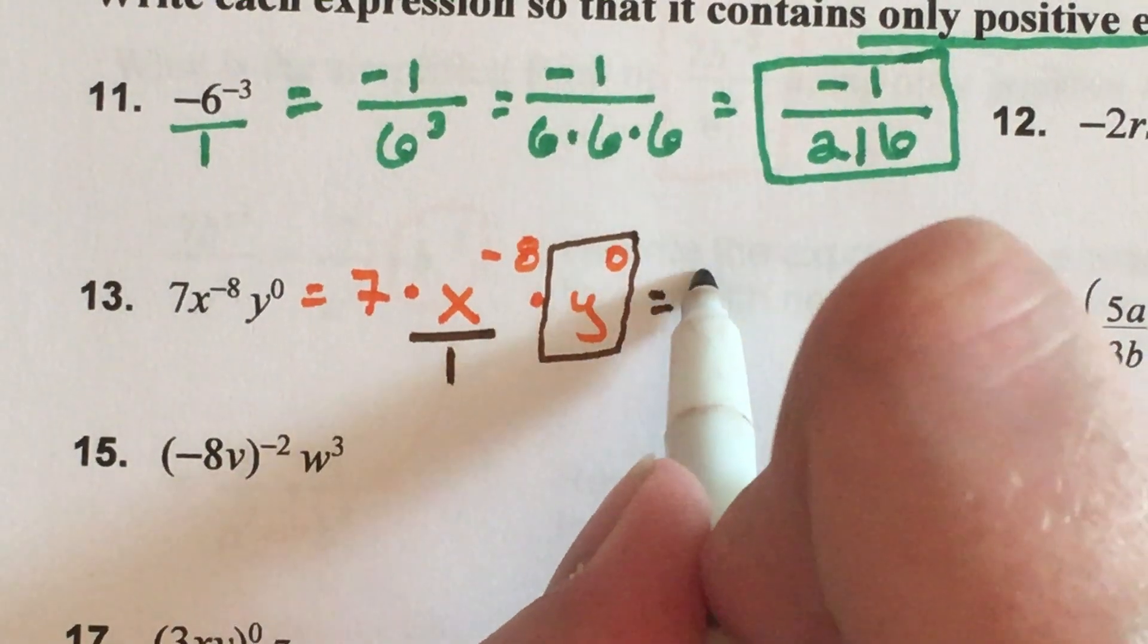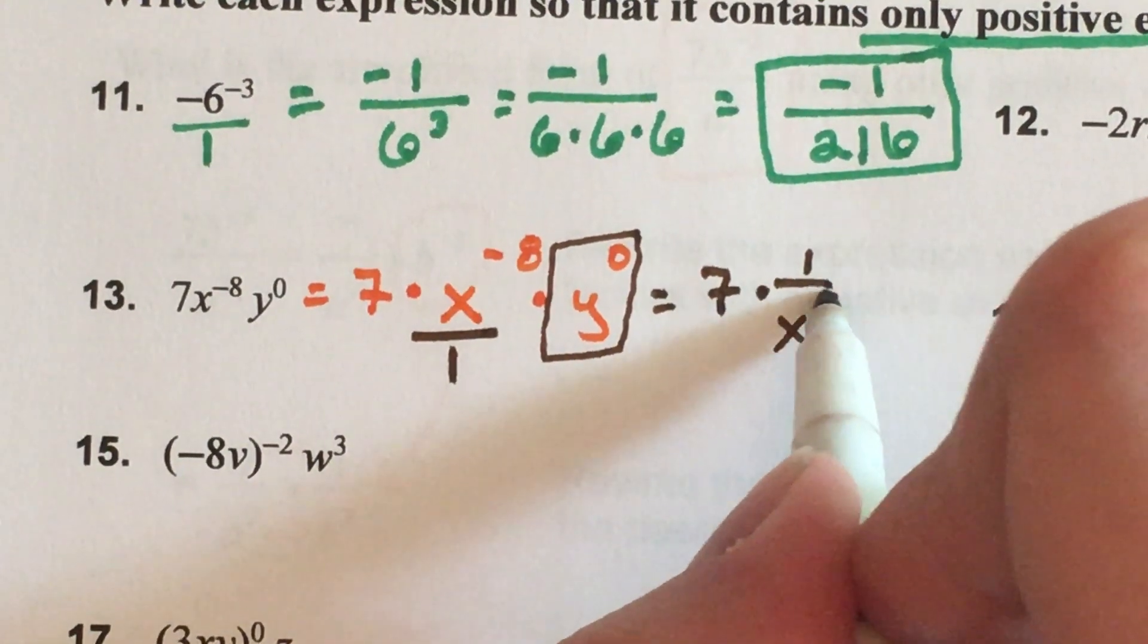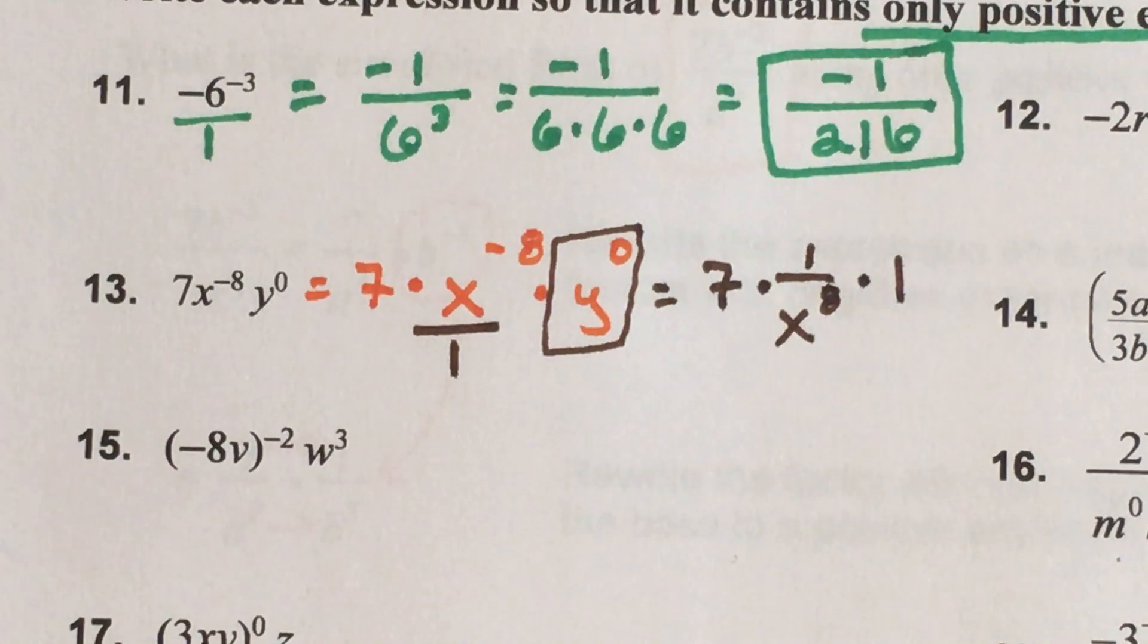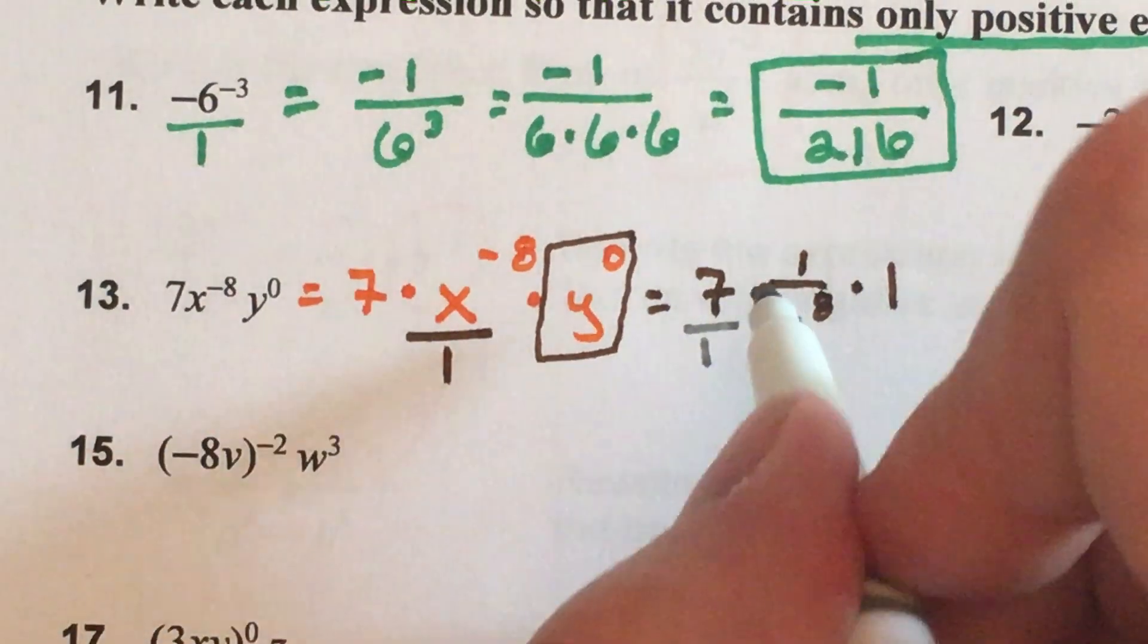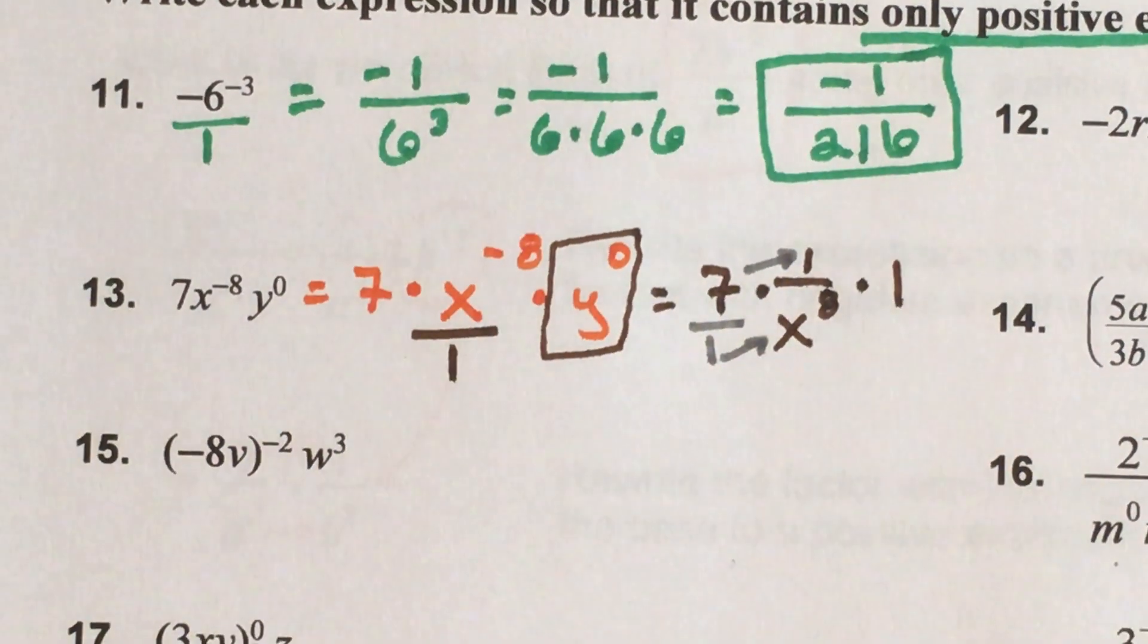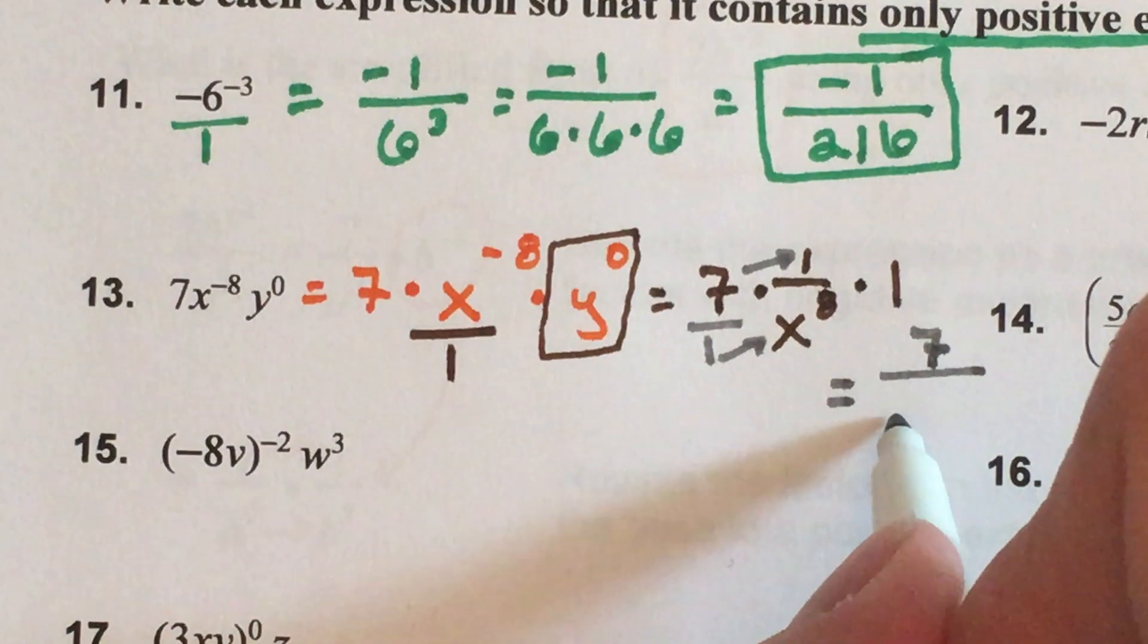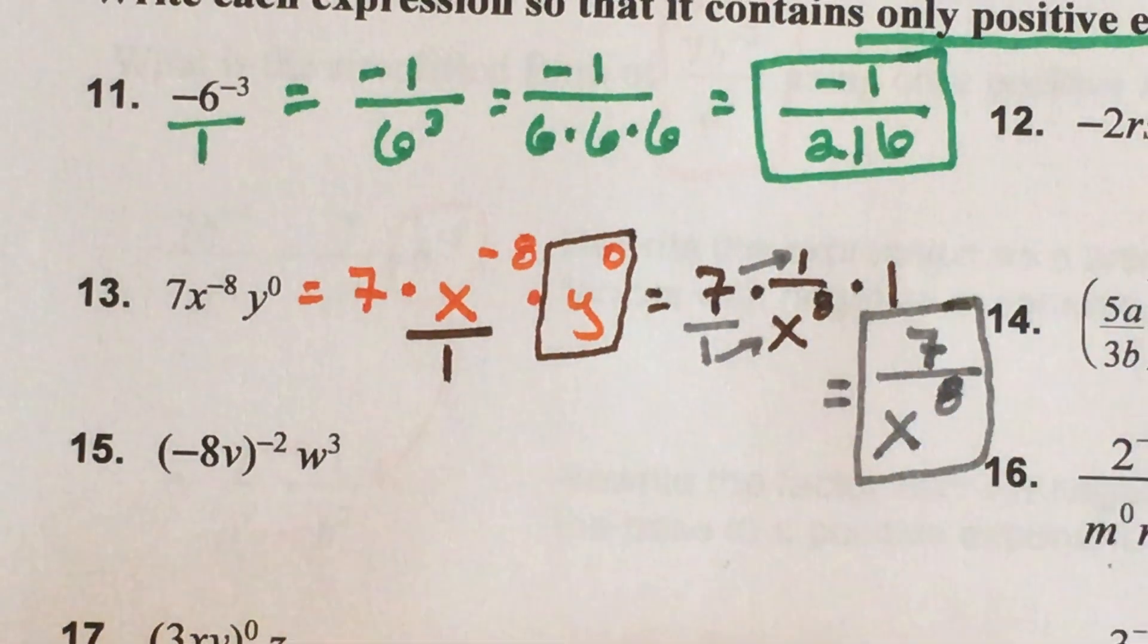So this ends up being seven times one over x to the eighth power times one. Let's see what that cleans up to look like. There's a one underneath the seven, so we know we have to multiply straight across and anything times one is just that thing. So I have a result of seven over x to the eighth power and that's it, that's number 13.